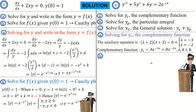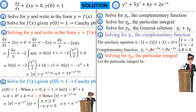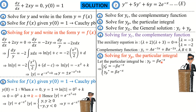Next, we solve for the particular integral yp. The particular integral takes the exact form of the right-hand side of the differential equation, provided that form is not already part of the complementary function. Here, I will write the particular integral as beta times e raised to the power negative x. If this form were part of the complementary function, I would multiply by x to get beta x e raised to the power negative x, but since it isn't, we proceed with the first trial.